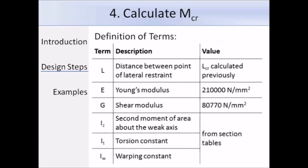Here is a list of the terms found in that equation. We have L_CR, which we've already calculated, and we have the Young's modulus E and the shear modulus G — values of those are given in clause 3.2.6 under the design values of material coefficients. At the bottom we have I_Z, I_T, and I_W, and on the next slide we can see that you can get these values from the section tables.